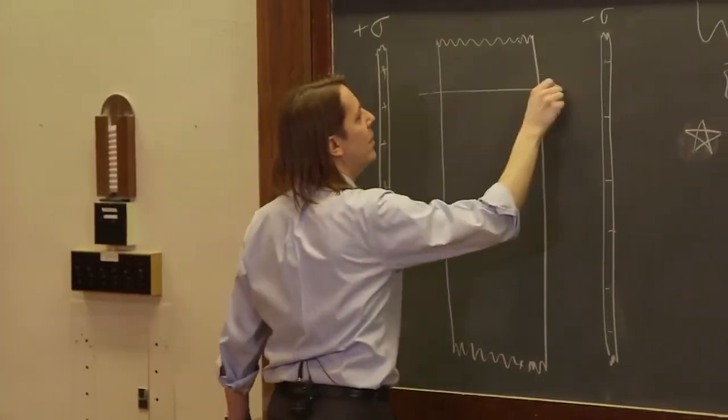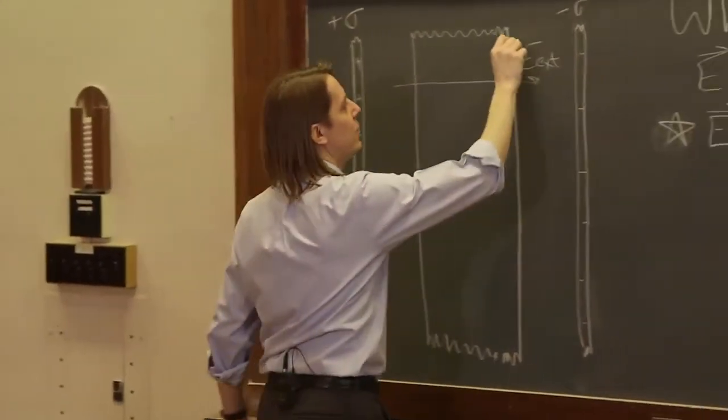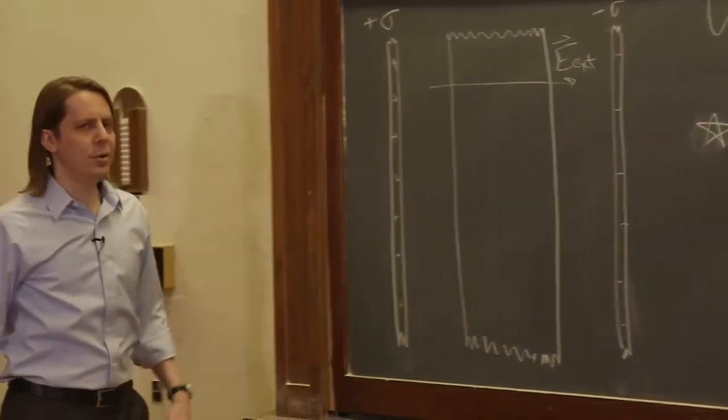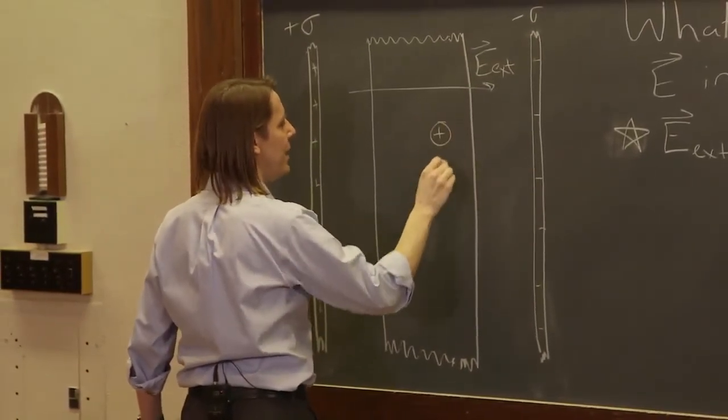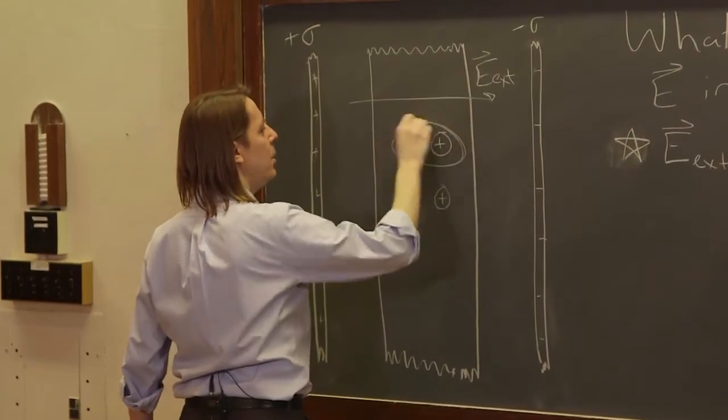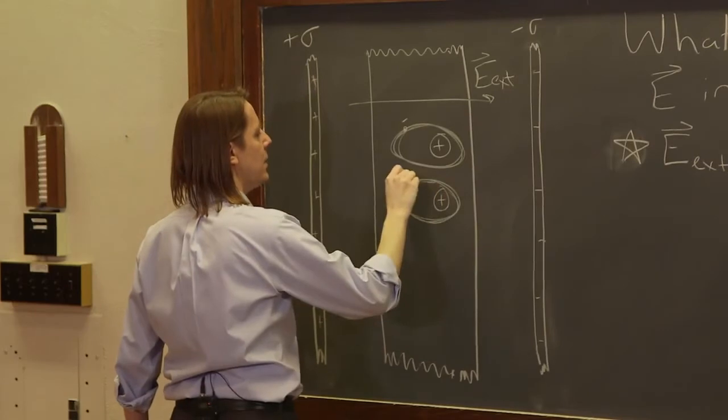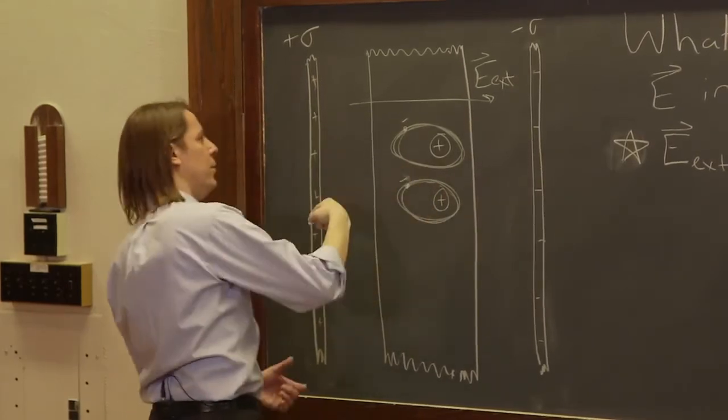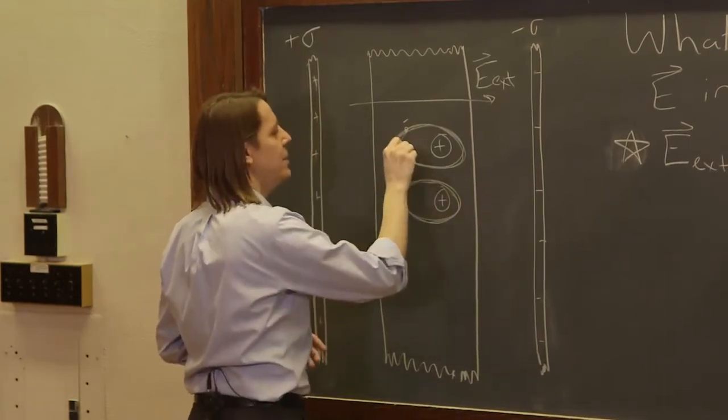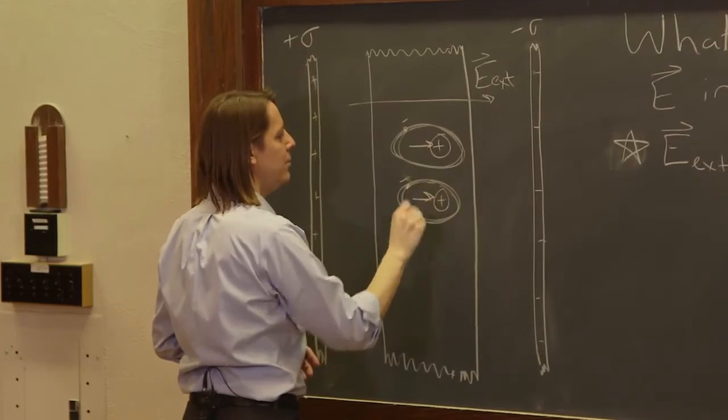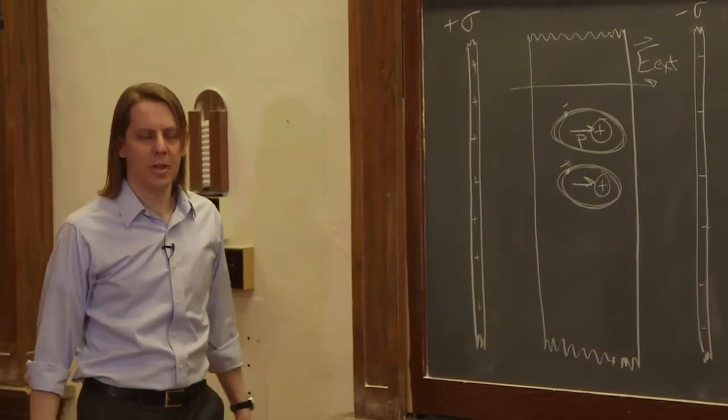And now this thing is inside a field, E external, or the original field was the external. So if it experiences a field, we know what will happen inside, we probably talked about this in our capacitor lecture, is the little molecules and atoms that make it up become a little bit warped. All right? So the electrons get kind of pushed to the left, or they get pulled to the left, to the nucleus, the positive nucleus goes a little bit to the right, and you generate little dipole moments, p, inside each molecule.